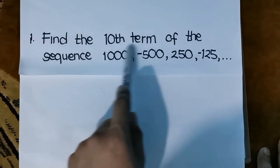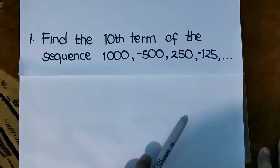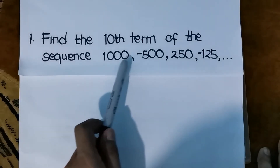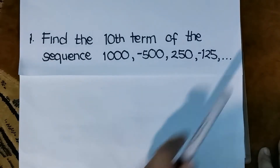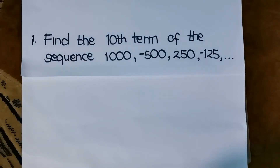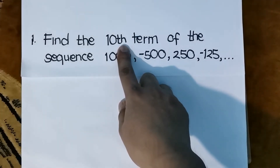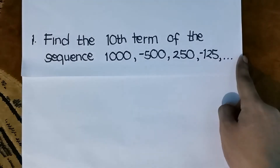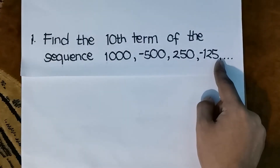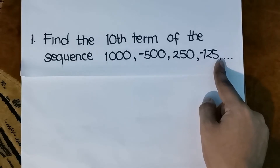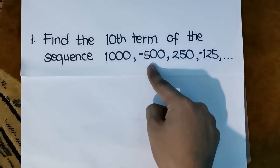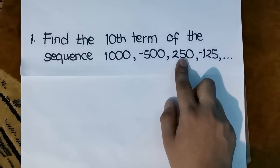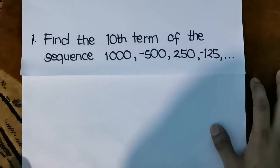So we need to find the 10th term. Instead of computing it manually by getting the common ratio and multiplying to the next terms until we get the 10th term, we're going to use the formula. This is a geometric sequence because they have a common ratio — dividing the second term by the first, third by the second, and fourth by the third gives the same quotient.